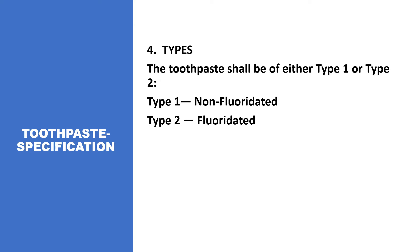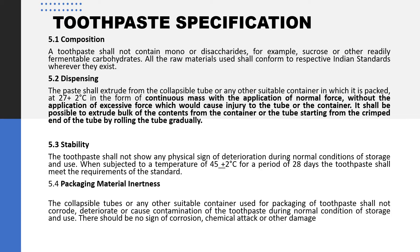Toothpaste basically comprises two categories: Type 1 and Type 2. Type 1 is non-fluoridated and Type 2 is fluoridated, meaning one contains fluoride and the other does not.